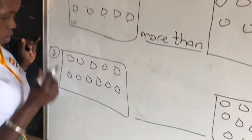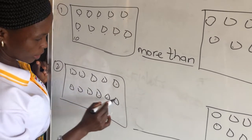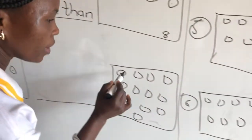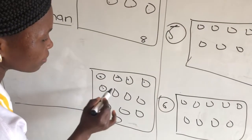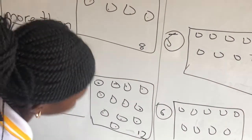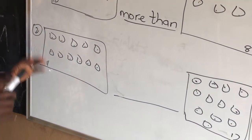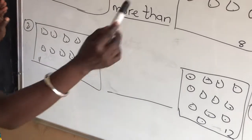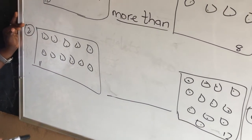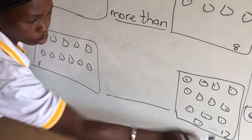Example 2. Count: 1, 2, 3, 4, 5, 6, 7, 8, 9, 10, 11. We have 11 here. The next group: 1, 2, 3, 4, 5, 6, 7, 8, 9, 10, 11, 12. Don't forget — always read from your left side. We have 11 members here and 12 members here. So 11 is less than 12.